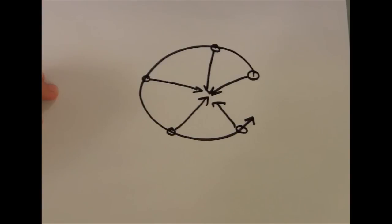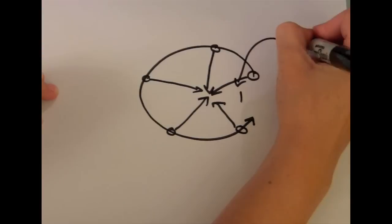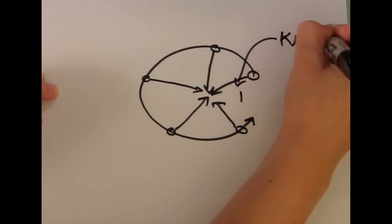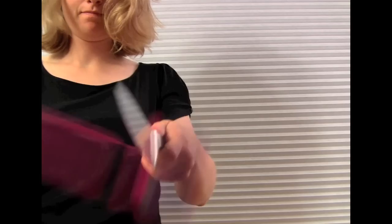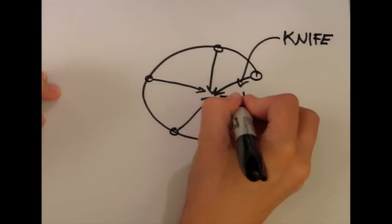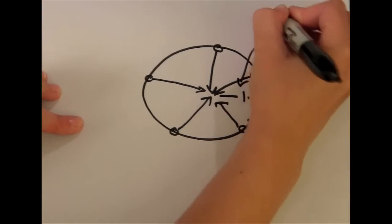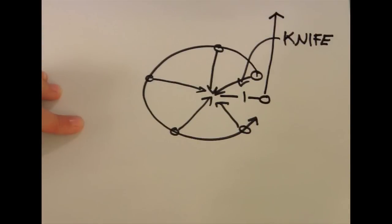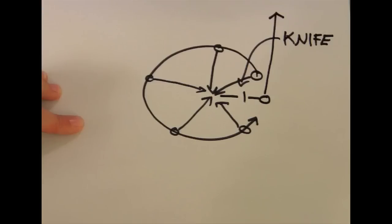What would happen to the ball if it no longer felt the string's force? My friend Zena and I tested this by slicing the string with a knife. He set the ball in circular motion, and I sliced the string. That was fast. With no string pulling it to the center, the ball went straight up into the air. Without an inward force, objects in circular motion would move tangent to the circle. Without the force pulling it to the center, it goes straight up, tangent to the circle it was moving in.